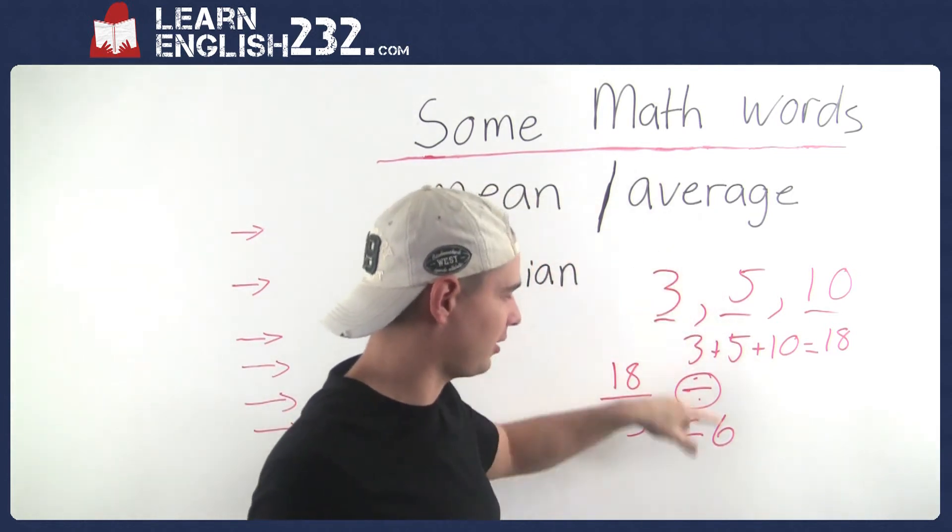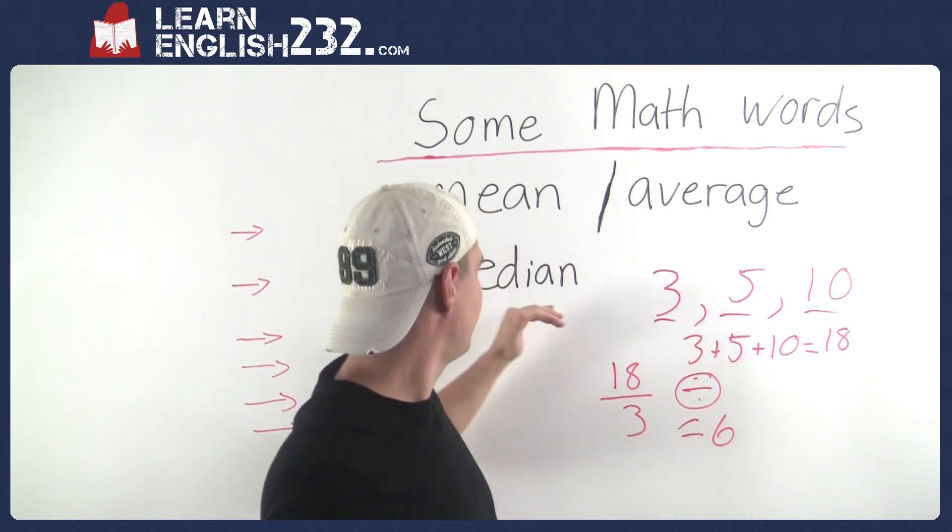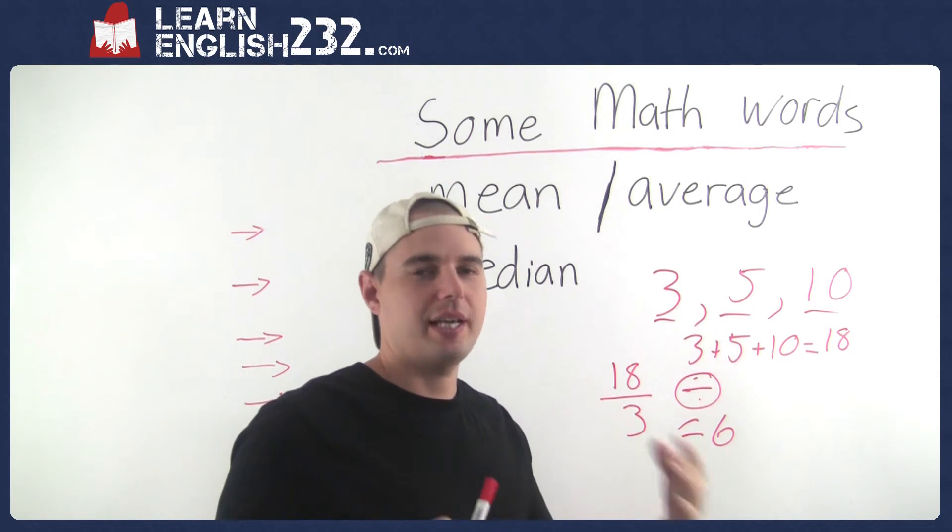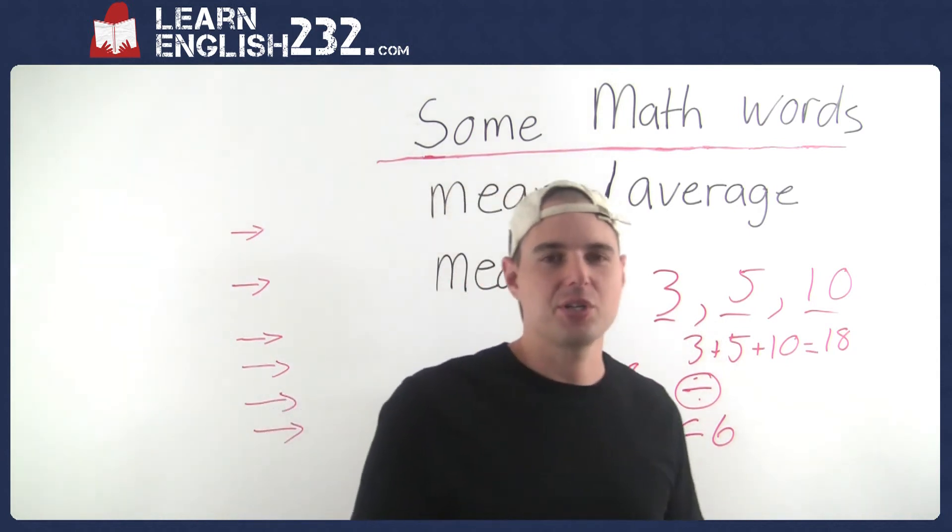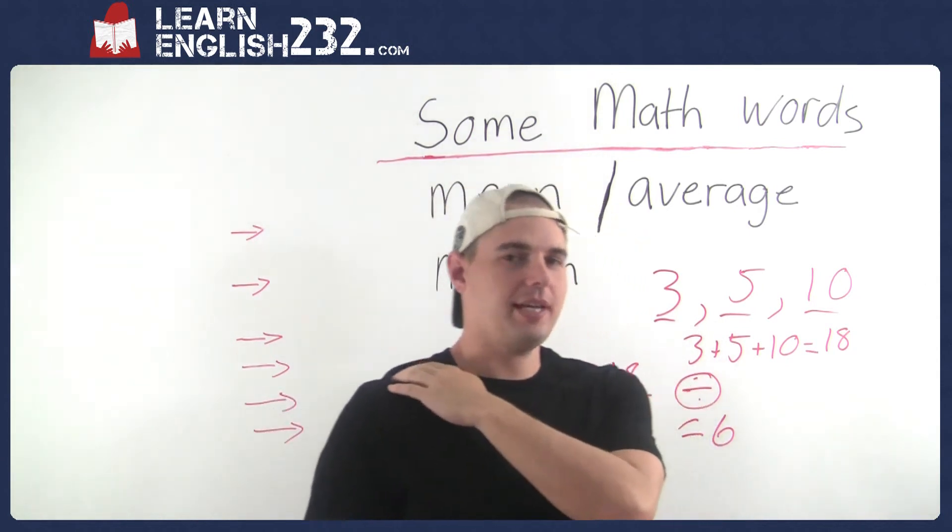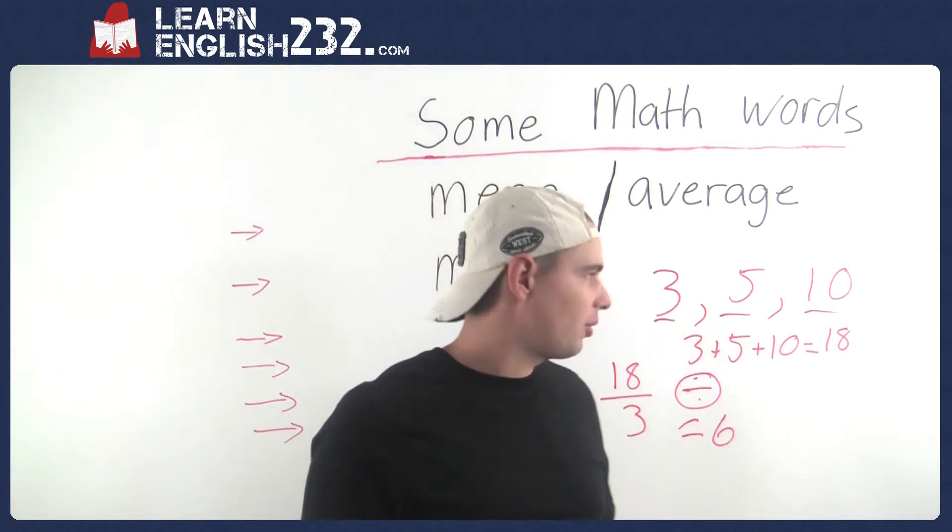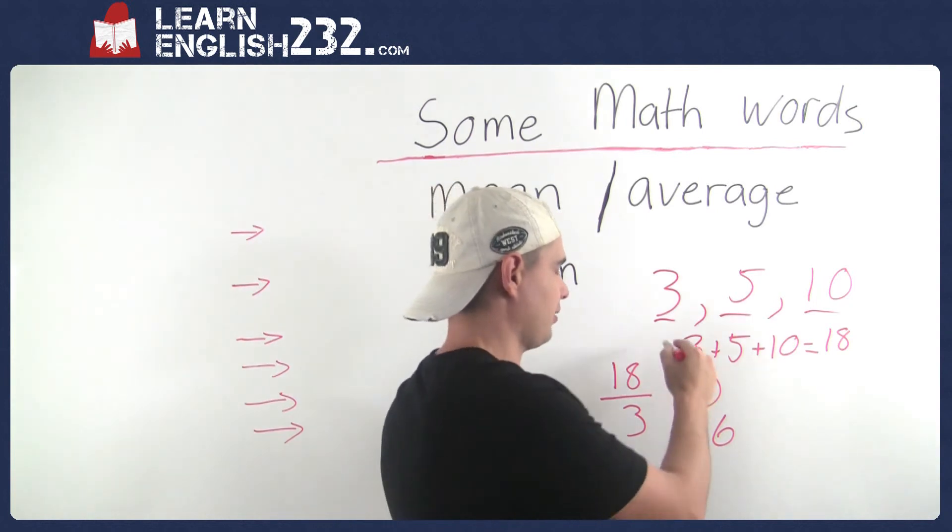Mean and average. That's what this number is. Now median, this is the one people don't know. Anytime you can take a mean or an average of a set of numbers, you can also take the median. And the median is the middle number.